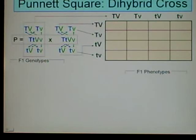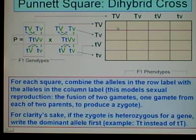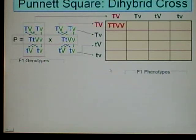Now we have our rows and our columns labeled. For each square, combine the alleles in the row label with the alleles in the column label. This models sexual reproduction. The fusion of two gametes, one gamete from each of two parents, to produce a zygote. For clarity's sake, if the zygote is heterozygous for a gene, write the dominant allele first. For example, we would write big T, little T, instead of little T, big T.